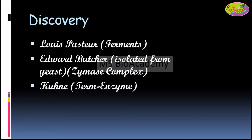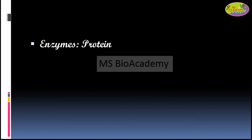Then Kühne came and gave the term 'enzyme,' based on the findings of Edward Butcher, who had isolated it from yeast. Basically, 'enzyme' literally means 'from yeast,' which is why Kühne named it 'enzyme.' This concludes the discovery part.